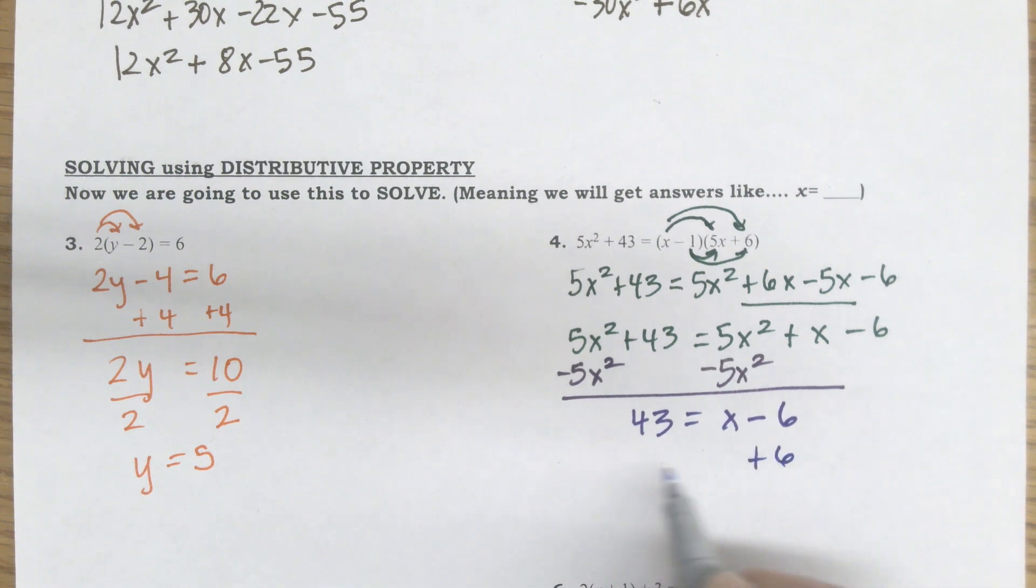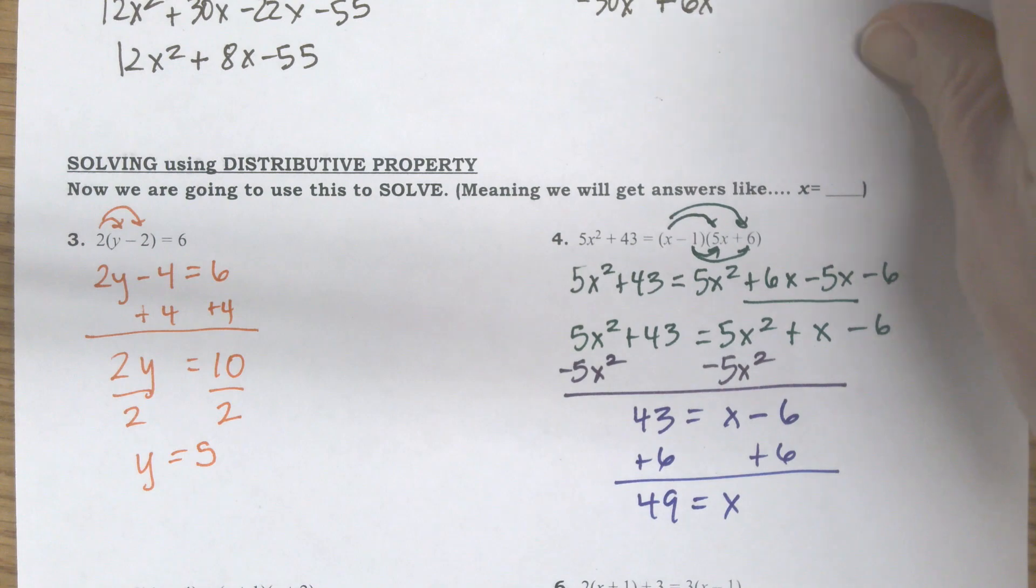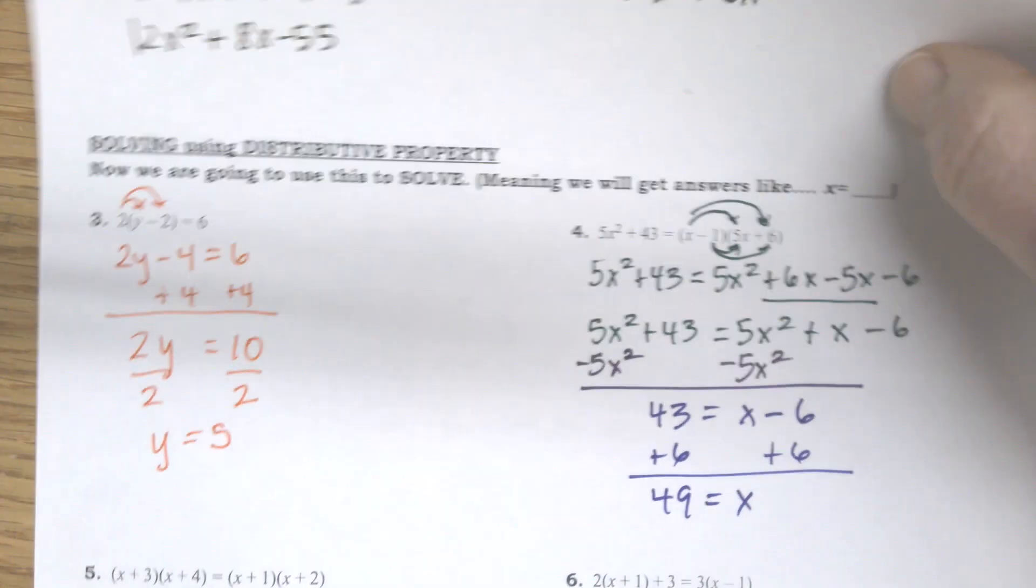And now, even though this looked really complicated for a while, it turns out to be a not so bad equation to solve. So to finish this up, I'll add 6 on both sides. And I get 49 equals x. So that distributing property is going to sometimes add an extra step. It might give me a squared that I have to deal with.